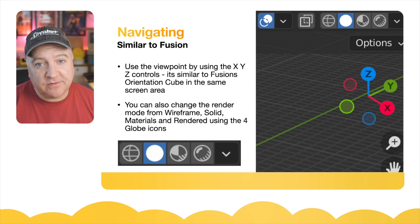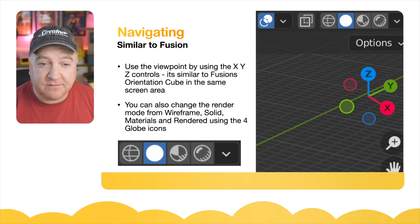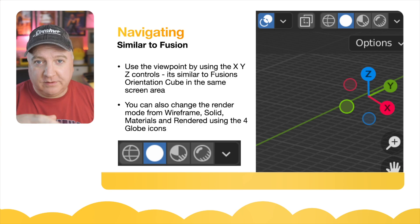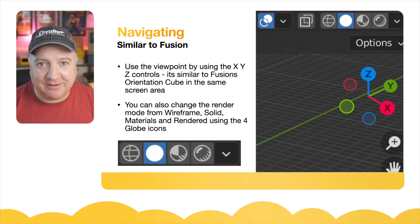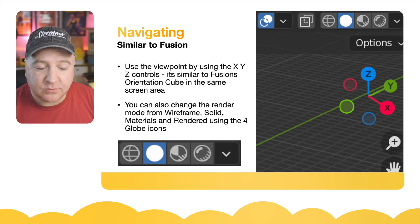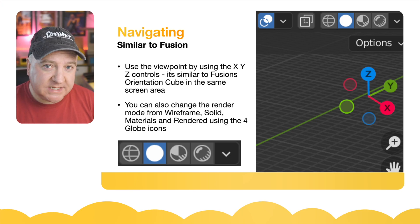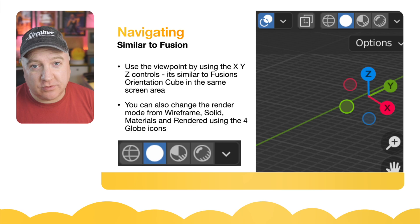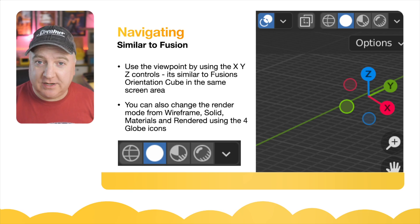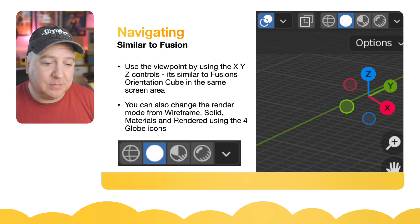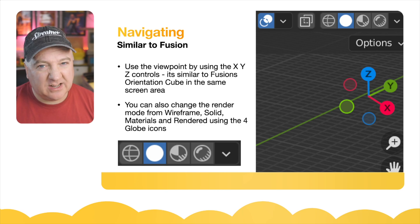Navigating around the Blender environment is pretty simple and very similar to Fusion. It's a 3D workspace: at the top right you've got X, Y, and Z orientation buttons similar to Fusion's orientation cube — you can drag them around to move the whole environment. You can scroll in and out with a mouse wheel. There are also four buttons at the top of the viewport: wireframe, solid, material, or rendered. Unlike Fusion 360, Blender includes a rendered option as a live workspace view.